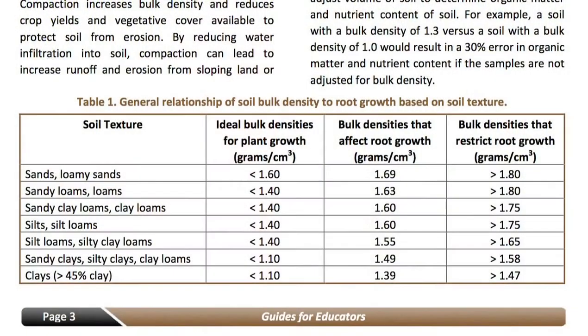Table one lists the ideal bulk densities for different textures, so you need to be able to determine textures. It also has bulk densities that are going to impact root growth. When we go to the field, one of the best things to do is to take a wire flag and insert it into the field to find areas where you think you might have problems with bulk density.